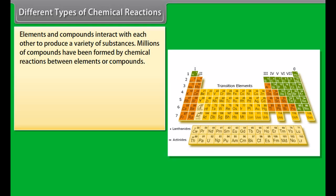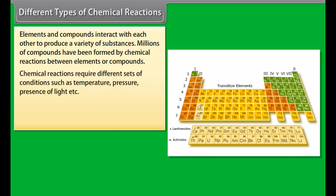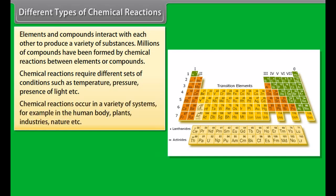The final balanced equation is: Al₂O₃ + 3H₂SO₄ → Al₂(SO₄)₃ + 3H₂O. In this equation, the oxygen atoms are 15 on both the reactant and product sides, confirming it is balanced.